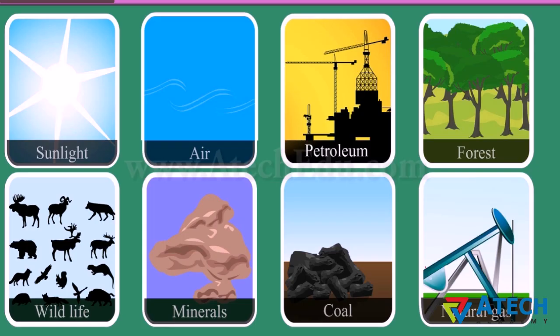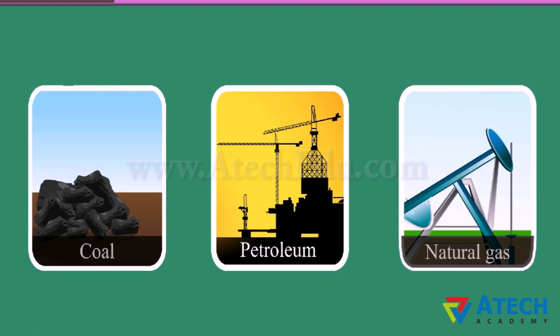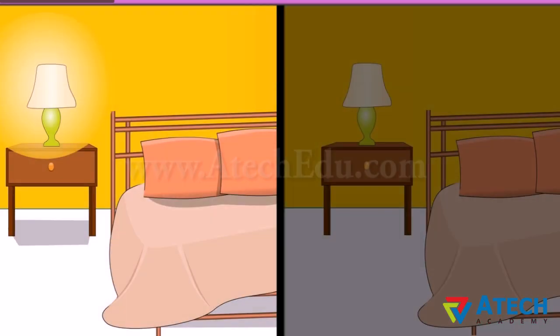Let's conclude what we learnt in this lesson. We learnt about different natural resources. Some of these are renewable and some are non-renewable resources. Fossil fuels are in great danger of getting over by continuous use and misuse. We shall try to conserve energy at home and at schools by following small tips.